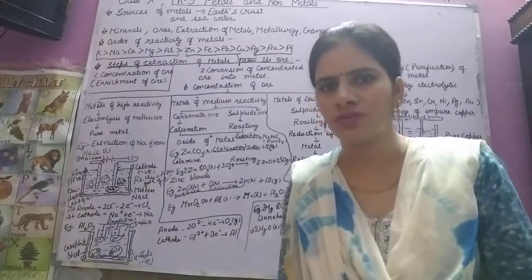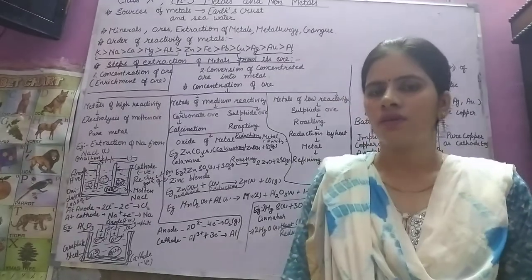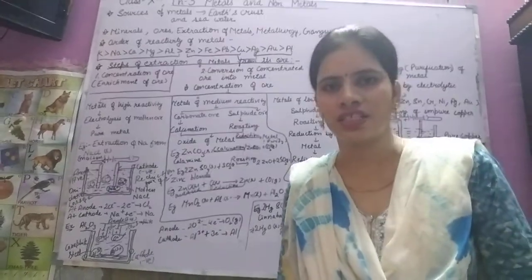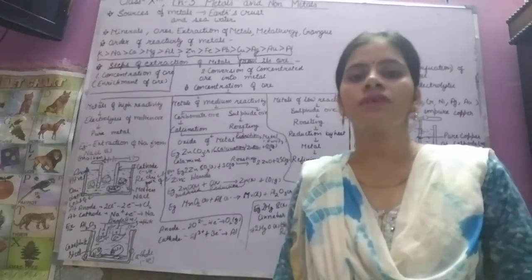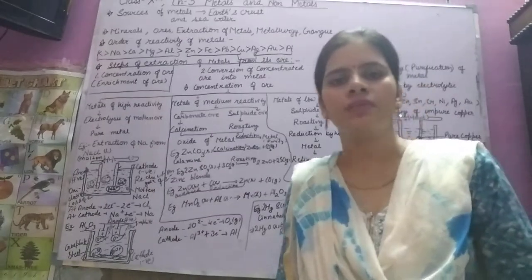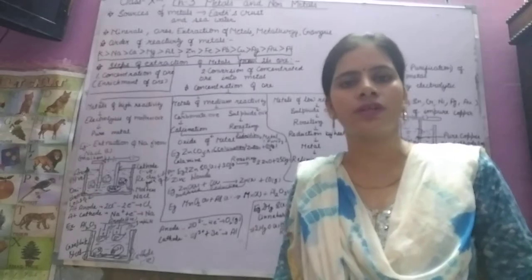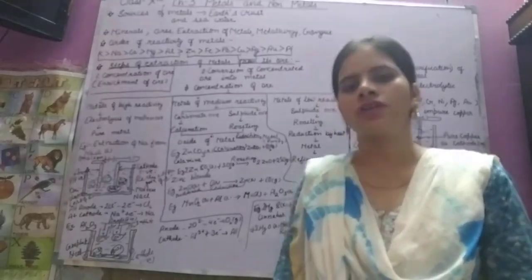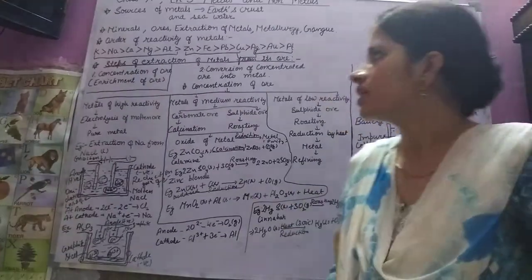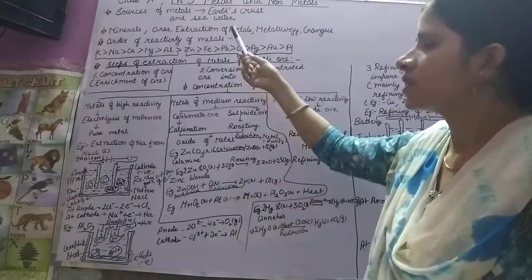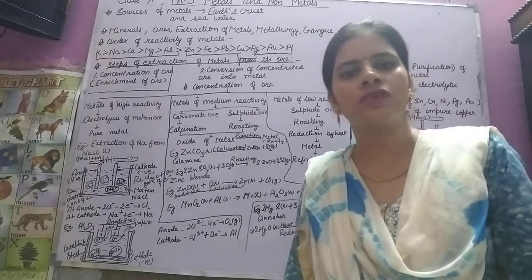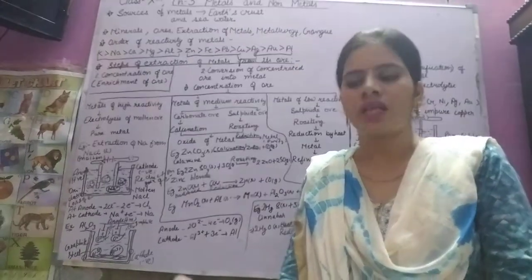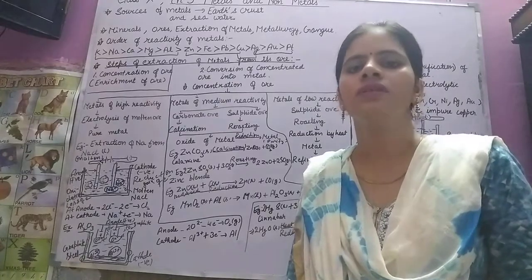What are the sources of minerals? Minerals are obtained from the Earth's crust — in the surface of the Earth. We can also obtain minerals from seawater, as seawater consists of salts and minerals.